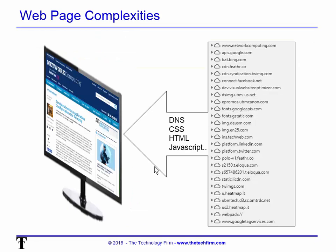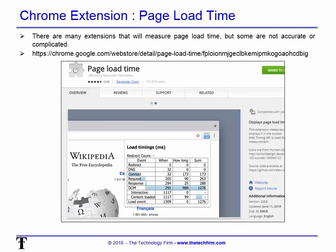Here's an example. You go to webnetworkcomputing.com and there's some DNS involved, some CSS, HTML, JavaScript — it's talking to all these servers, which is very common. Some sites will do more than others. So it's important to understand that if you are going to measure away from the client, you need to make sure you include all these other servers and services.